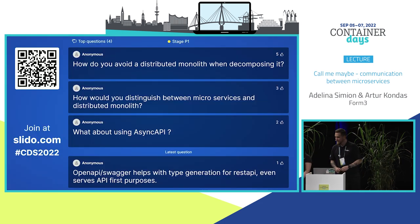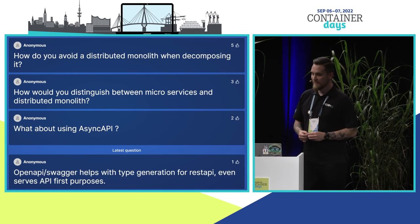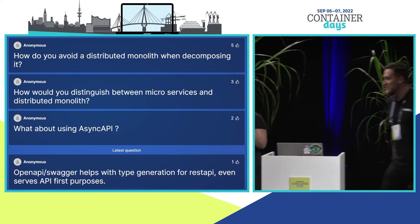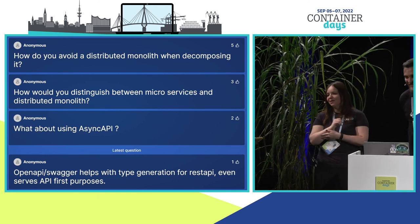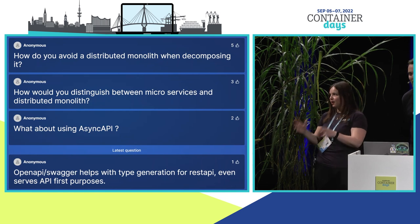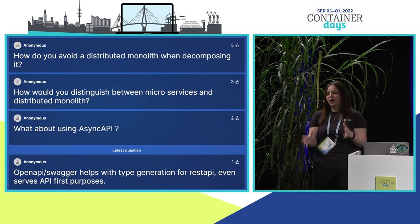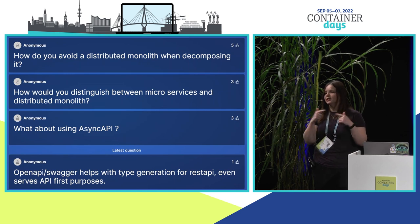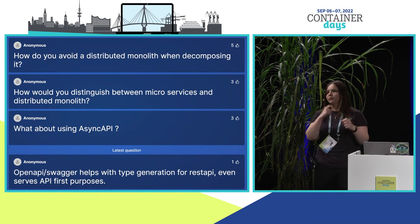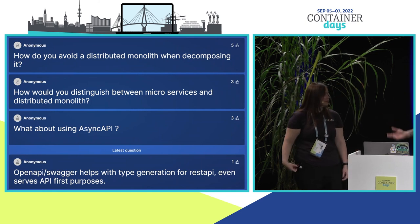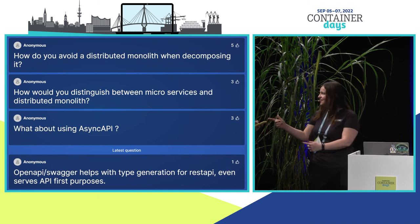Two related questions: How do you avoid a distributed monolith when decomposing? And how do you distinguish between microservices and a distributed monolith? It's about how you divide the separation between your microservices — each one needs to have a specific thing that it does. The key is: are they able to work without impacting each other? If even though you have multiple services they all fall over together, they're a monolith. Is it a sandcastle or is it dominoes?